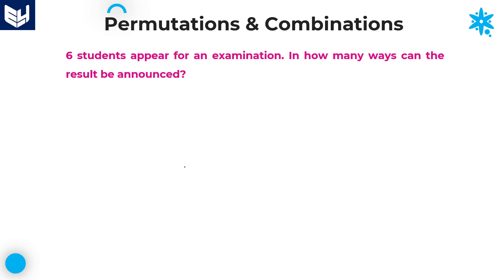Let's move on to the next question. This model is very important — listen carefully. There are six students appearing for an examination. In how many ways can the result be announced? This problem looks very easy, but you need to understand the concept to get the answer simply.